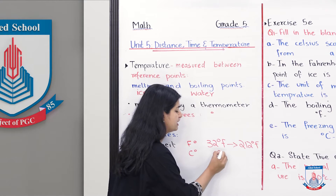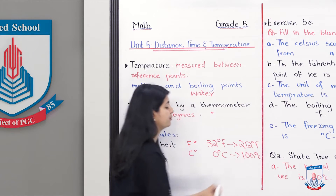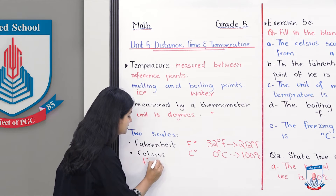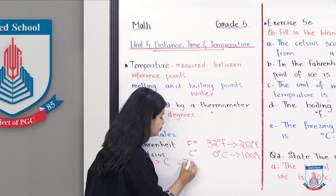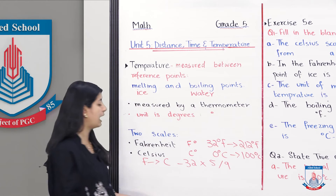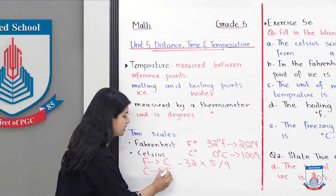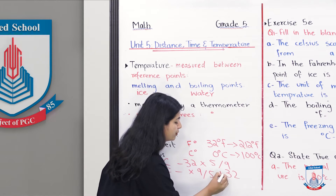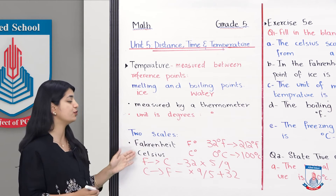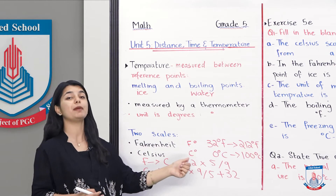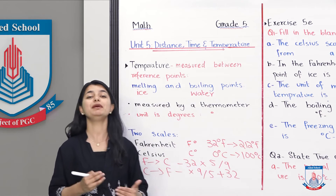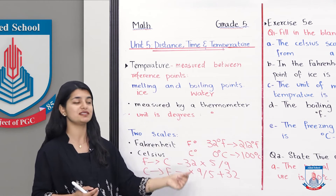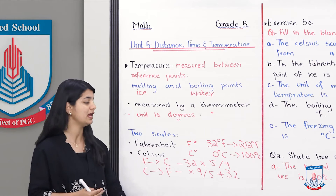Celsius is 0 degrees to 100 degrees centigrade. We can convert between these two scales. To convert Fahrenheit to Celsius, you do minus 32 then multiply by 5 over 9. To convert Celsius to Fahrenheit, you multiply by 9 over 5 and then add 32. In future classes you will understand that the difference between 212 and 32 compared to the difference between 100 and 0 is how this conversion formula is derived.